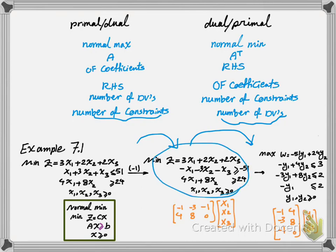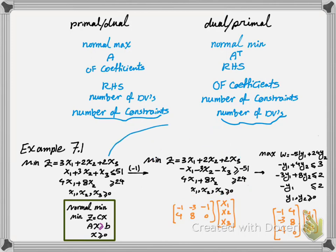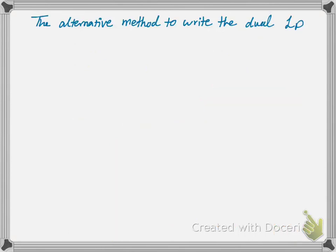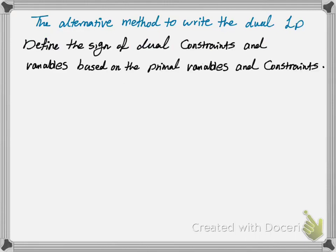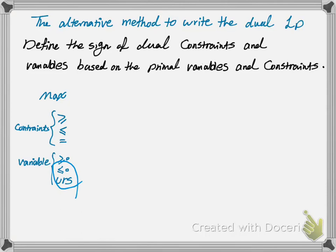Sometimes we can skip the intermediate normalization step — you don't necessarily have to normalize to write the dual. You can directly go from the primal to the dual without normalization. This alternative method defines the sign of the dual constraints and variables based on primal variables and constraints. Suppose that you have a max problem. Your constraint can be greater than or equal, less than or equal, or equal. Your variables can be positive, negative, or unrestricted in sign. Previously we learned how to deal with these conditions in earlier chapters, even though linear programming problems always want greater than or equal sign for variables.